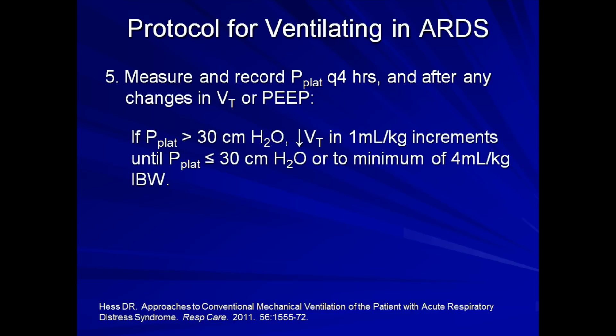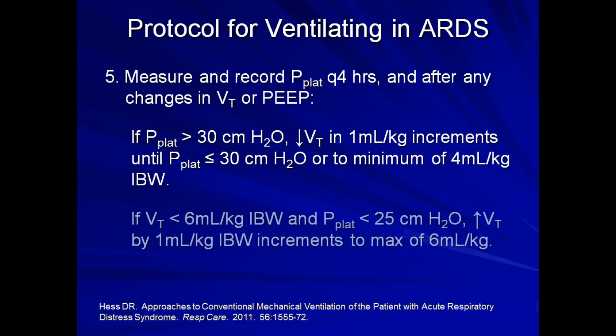If the plateau pressure is greater than 30, lower the tidal volume in 1 mL per kg increments until either the plateau pressure is equal to or less than 30, or until a minimum of 4 mL per kg of ideal body weight is reached. If the tidal volume is less than 6 mL per kg and the plateau pressure is less than 25, increase the tidal volume by 1 mL per kg increments to a maximum of 6.